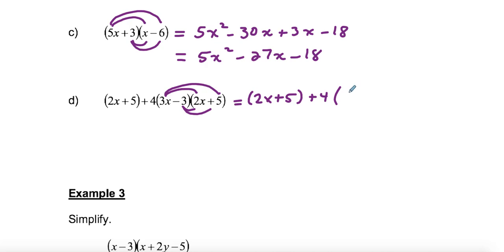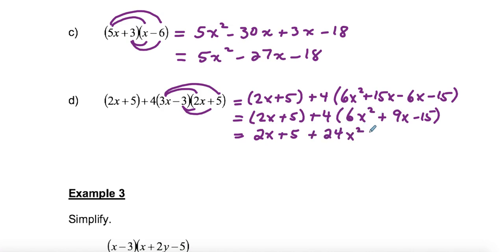But I would use the distributive property on my brackets here. So I would have 6x squared plus 15x minus 6x minus 15. I would combine my middle terms here first. So 15 minus 6, we have 9x. And then the minus 15. Now I feel like I'm ready to probably start dropping some of the brackets here. 2x plus 5. I'd have to multiply all of these terms by 4. So I would get 24x squared plus 36x minus 60.